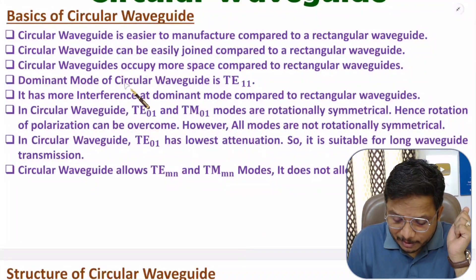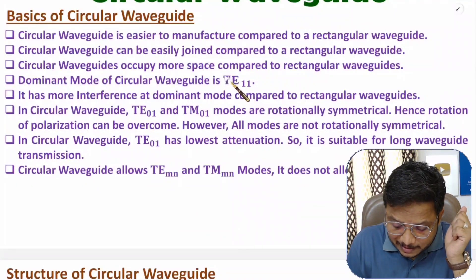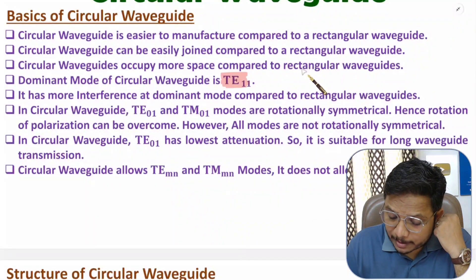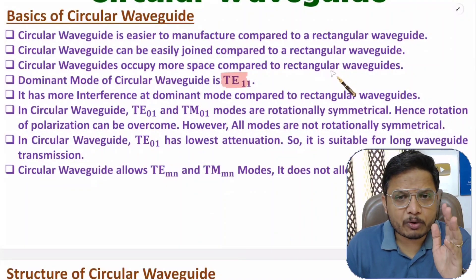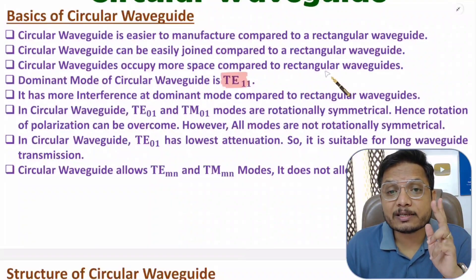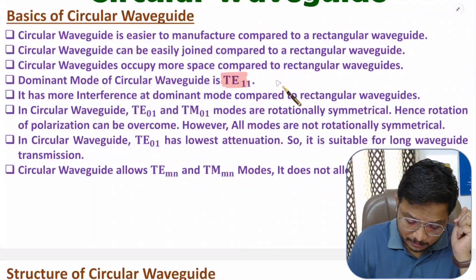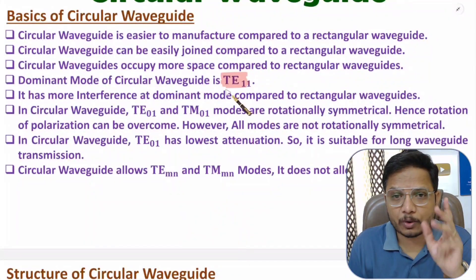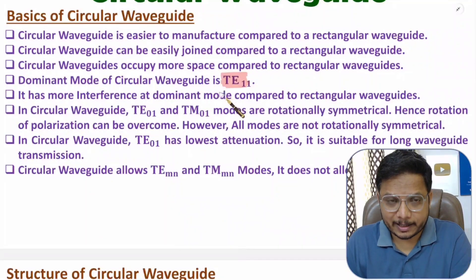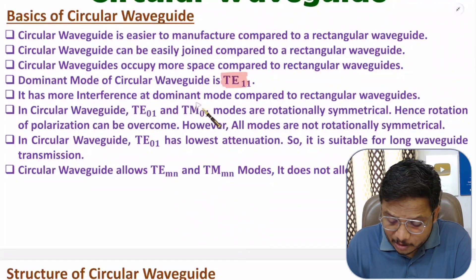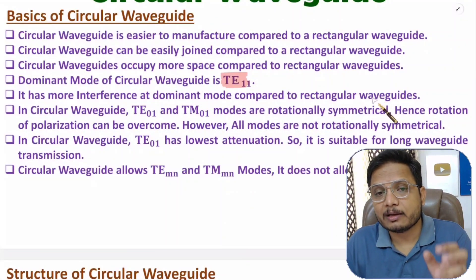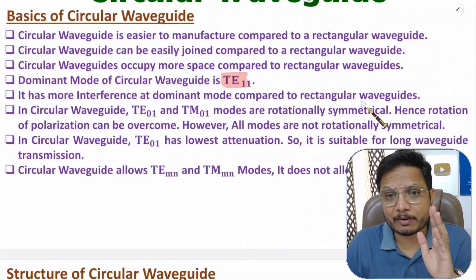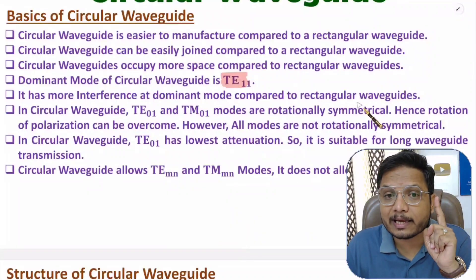The dominant mode of circular waveguide is TE11 — this is very essential to know. The dominant mode of rectangular waveguide is TE10. Dominant mode means the mode with the lowest cutoff frequency. With circular waveguide, the lowest cutoff frequency is associated with TE11 mode. It has more interference at the dominant mode compared to rectangular waveguide.